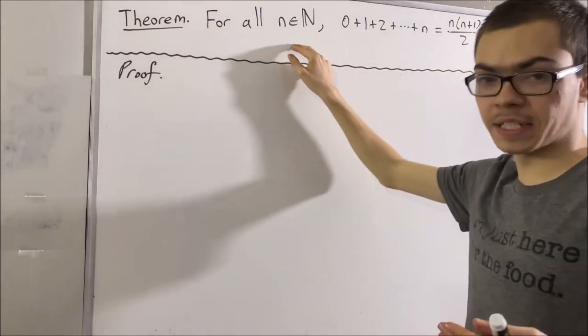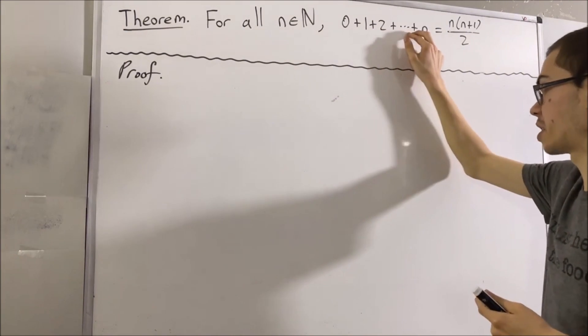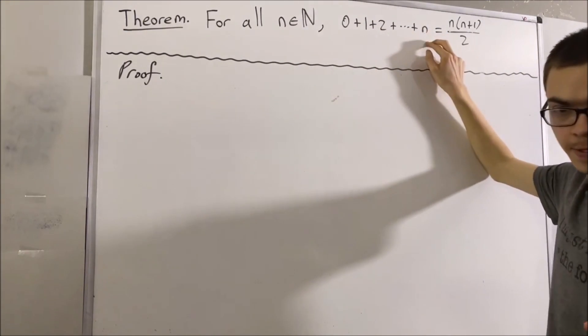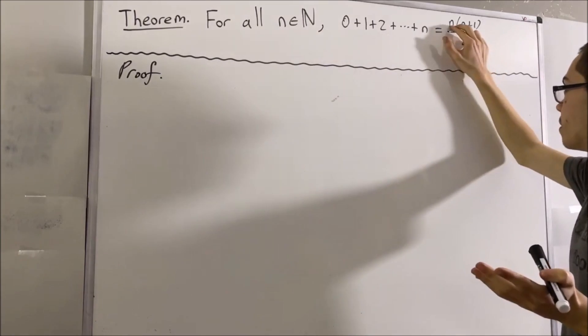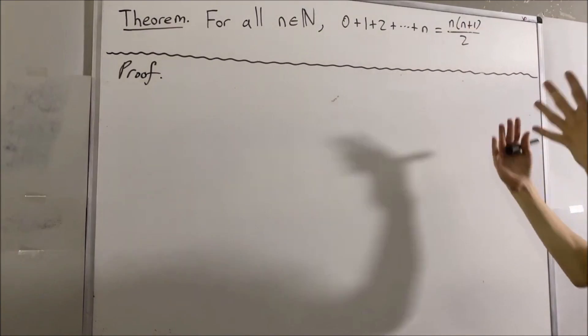So for instance, if we had n equal to 67, then it turns out 0 plus 1 plus 2 plus dot dot plus 66 plus 67 is equal to 67 times 68 divided by 2. And that's really the idea.